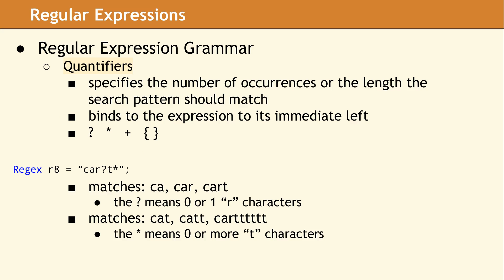Quantifiers are another type of grammar category — they allow you to simplify the regex when you are looking for repeated patterns. The star and the plus are very similar: the star matches zero or more times, while the plus matches one or more times. In the R8 example, the question mark will match any string which has zero or one R's — we will match on CA and CAR. With the added star, it will also match any string like CAT or CATT with any number of T's.